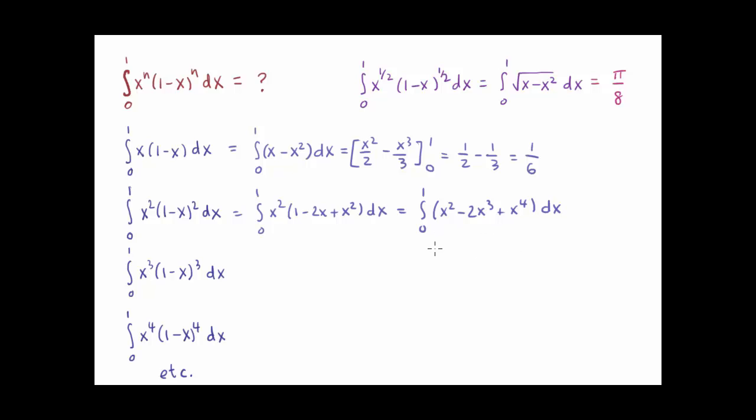And then integrating term by term, like before, we have x cubed over three minus two x to the fourth over four, or simply x to the fourth over two, plus x to the fifth over five. And we want to integrate that also from x equals one and x equals zero and subtract. Again, the zero doesn't have any effect. And we get one-third minus one-half plus one-fifth, which is one over thirty.